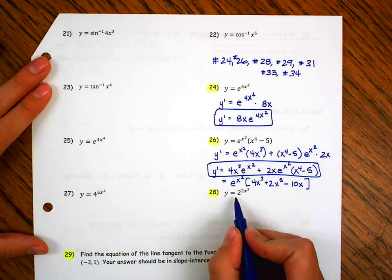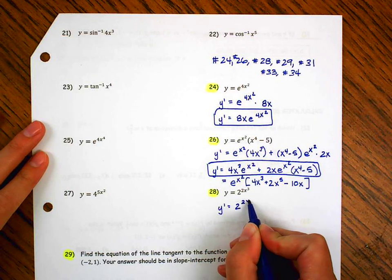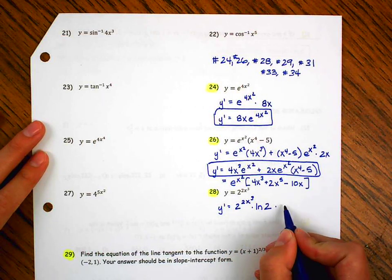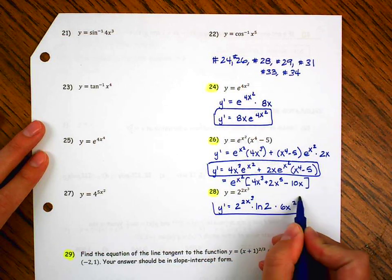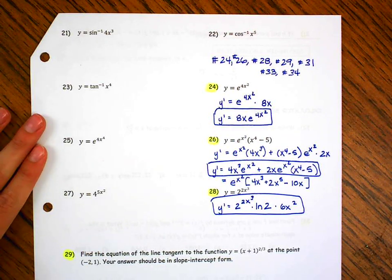Remember, when it's free response, once you get to an algebraically correct answer like this, you can leave it. If it was a multiple choice question, you're probably going to have to match it to a simplified form. Okay, let's look at number 28. I have an exponential, but my base is 2. So my derivative is going to be 2 to the stuff times ln of the base, which is 2. So that's the derivative, but I have 2 to the stuff, so I need to multiply by the derivative of stuff. And you can leave your answer just like that.